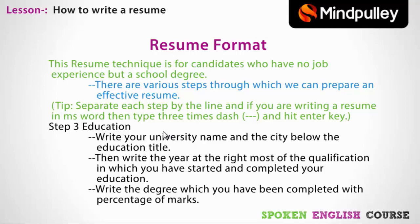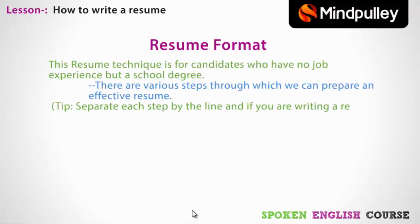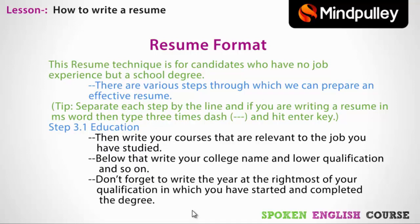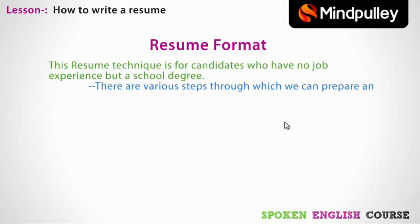Step number three: type 'Education.' Under the education section, write your university name and the city where the university is located. Then write the year at the rightmost side indicating when you started and completed your education. Write the degree you completed along with your percentage of marks. For example, if you have done an MSc at university, write 'MSc in Information Technology,' etc. Then again, type three dashes and hit Enter to create a line.